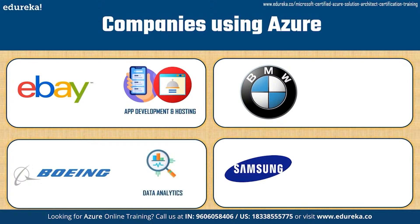Boeing mainly uses Azure for its data analytics services — things like crew planning, maintenance optimization, fuel optimization, and crew training by building predictive models on the platform. BMW uses Azure's Internet of Things to make manufacturing processes within their factories more efficient by connecting different machines, sensors, and other devices.